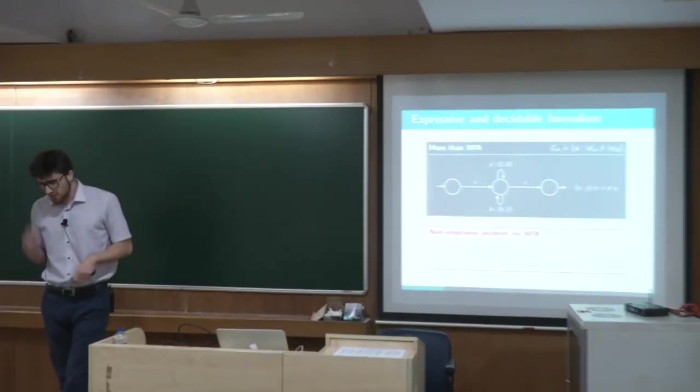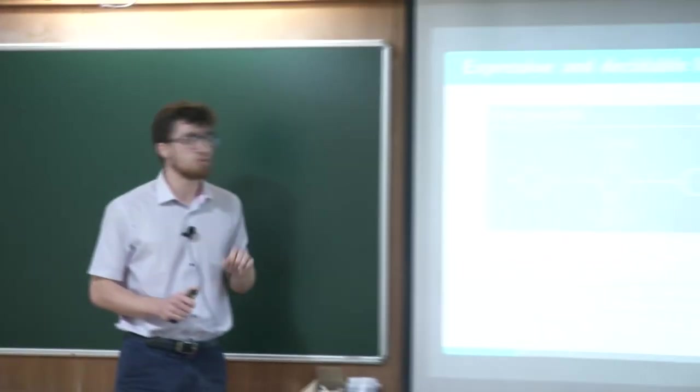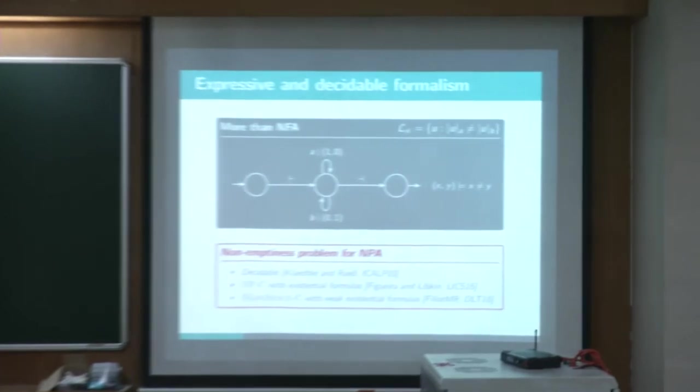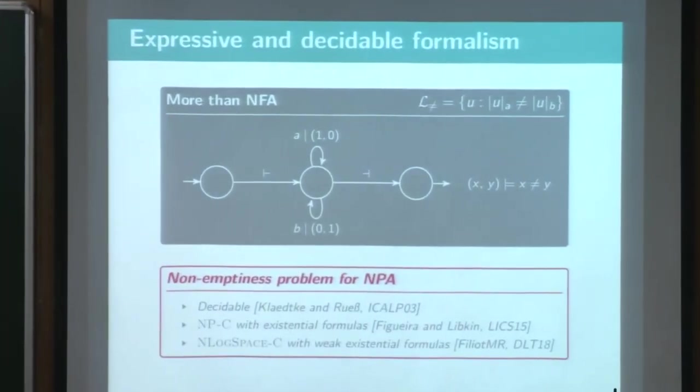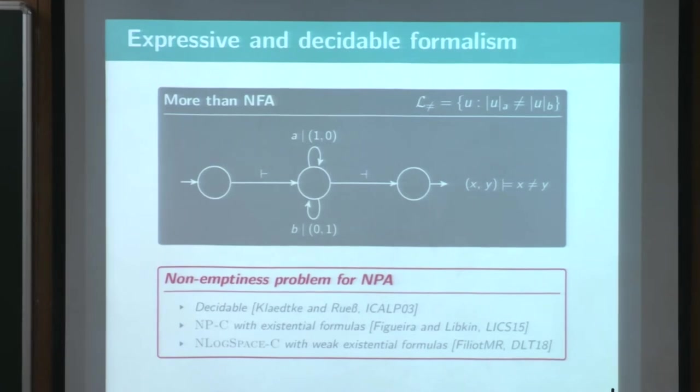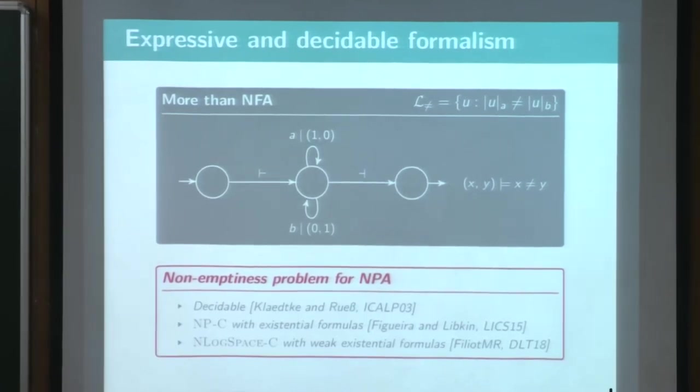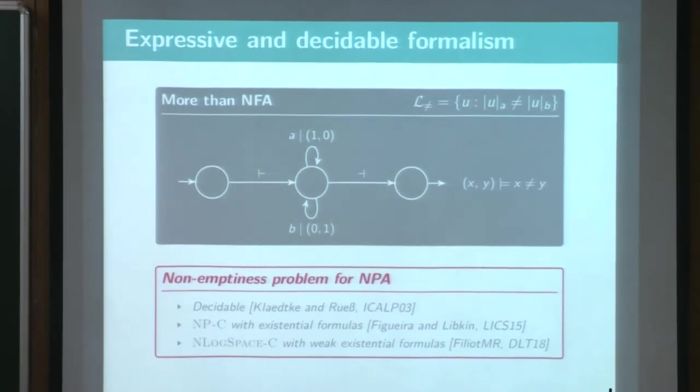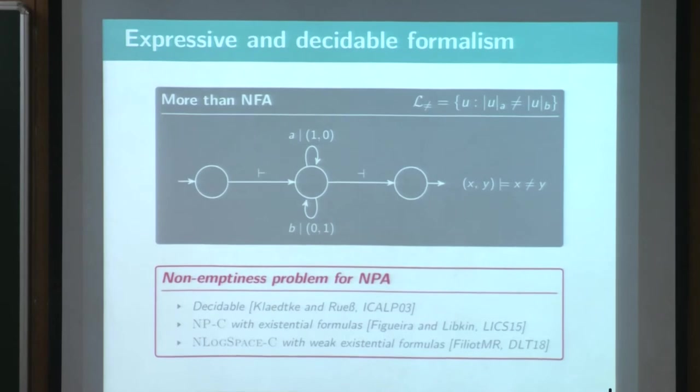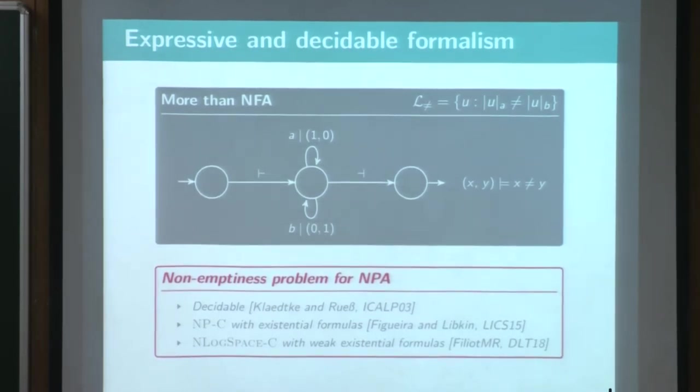And even log-space-complete if in addition this formula is weak. And when you think about it, the weights are supposed to be encoded in binary in this model. And so this log-space result seems very surprising because you can be out of memory by taking only one weight on transition. That's a quite interesting result, actually.